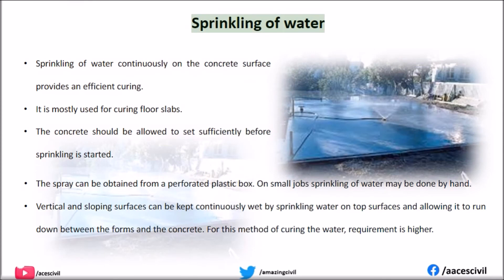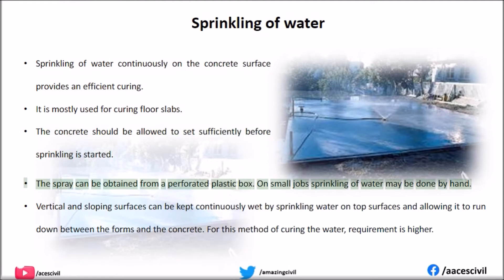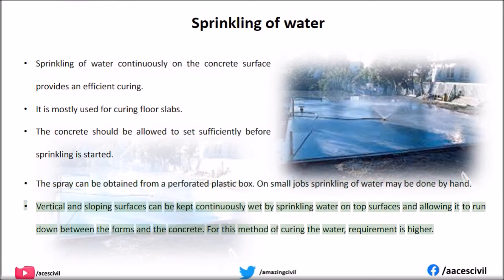Sprinkling of water: Sprinkling water continuously on the concrete surface provides efficient curing. It is mostly used for curing floor slabs. The concrete should be allowed to set sufficiently before sprinkling is started. The spray can be obtained from a perforated plastic box. On small jobs, sprinkling of water may be done by hand. Vertical and sloping surfaces can be kept continuously wet by sprinkling water on top surfaces and allowing it to run down between the forms and the concrete. For this method of curing, the water requirement is higher.